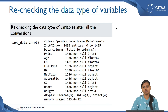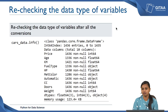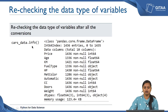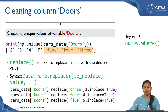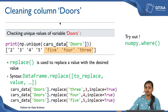We have changed the data type for a few variables. Now I want to recheck the data types after all the conversions by getting the concise summary of cars_data using the dot info command. If you see now, all the variables are of the expected data type — for example, kilometers is float, metallic_color is object, and automatic is object. Now we have to clean the column doors, because in the previous lecture we saw it had some string values.